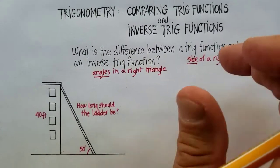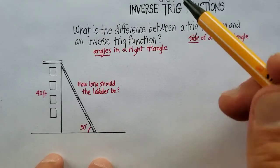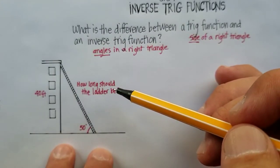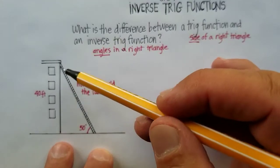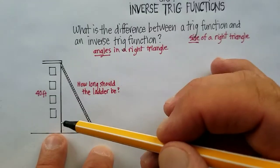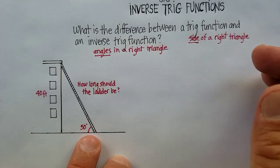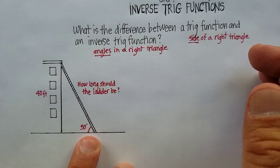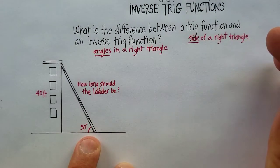Now, let's apply that to this particular problem and decide which one of these we're going to end up using. How long would a ladder be if it were leaned against a building that were 40 feet high at an angle of 50 degrees? Which are we going to be using, a regular trig function or an inverse trig function?